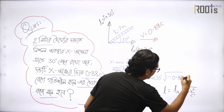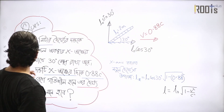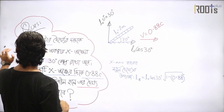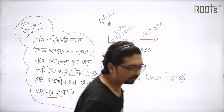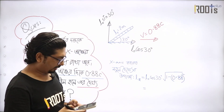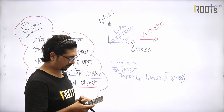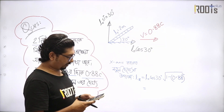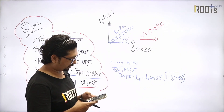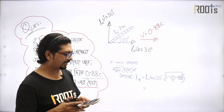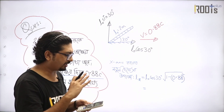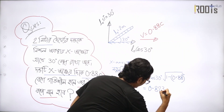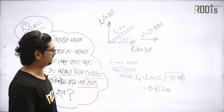Think here: L0 cos 30 degrees into root over 1 minus v-squared. v-squared means 0.88c squared, so c-squared and c-squared cancel. We will write 0.88 total square. Terms with this x is equal to not only 2. So our calculation might be: 2 cos 30 into root over 1 minus 0.88 squared, so 1 minus 0.88 squared into 2 cos 30 degrees. I write the value of 0.823, and L of x is 0.823 m.